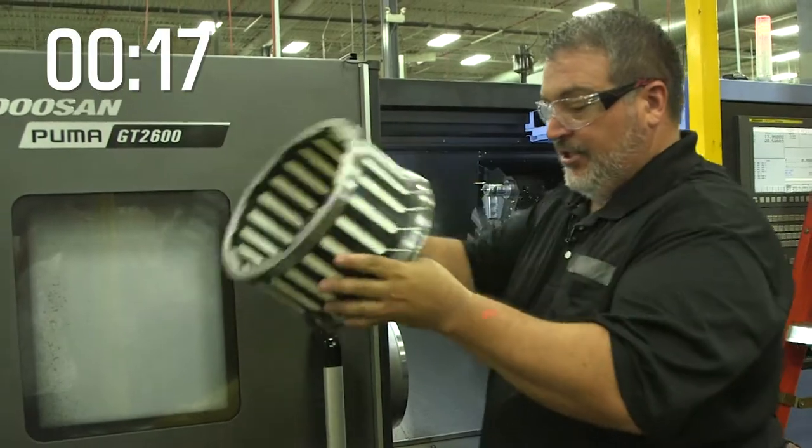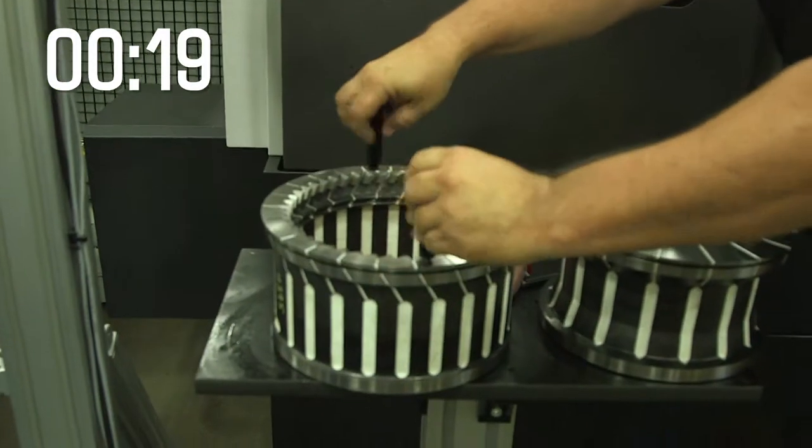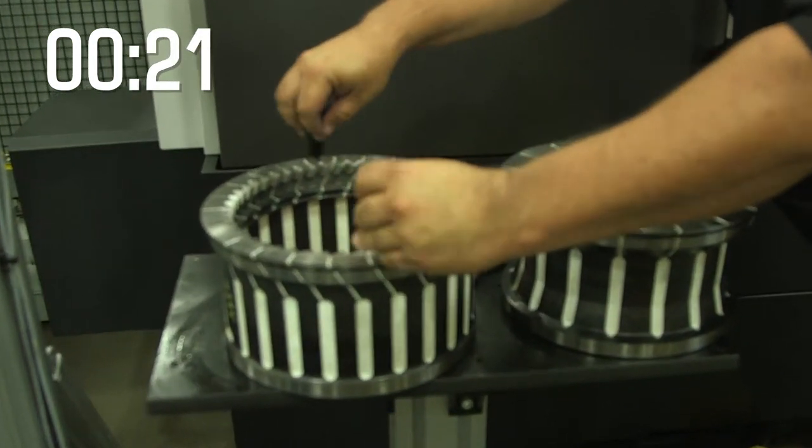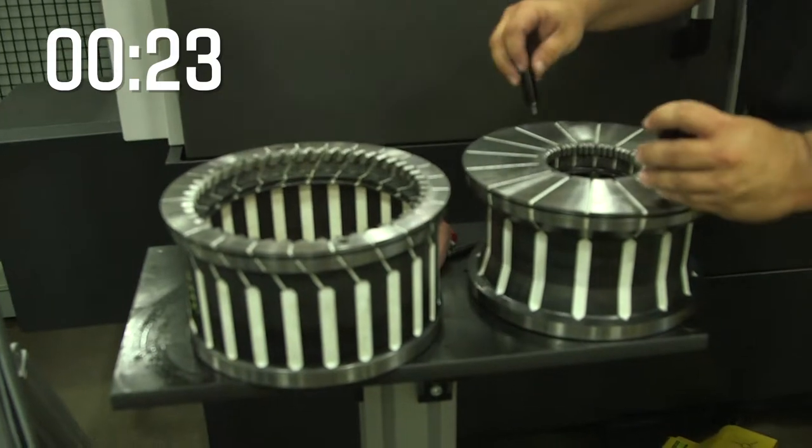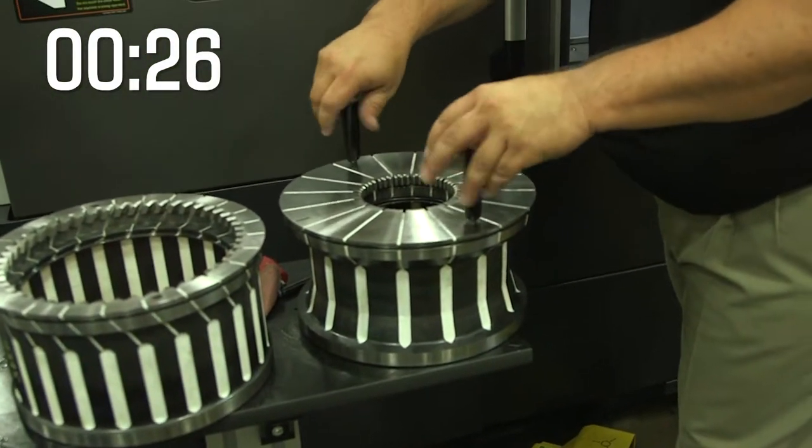It allows us to pop out the old collet that is a bigger gear size and go to a smaller gear size in a very short period of time.